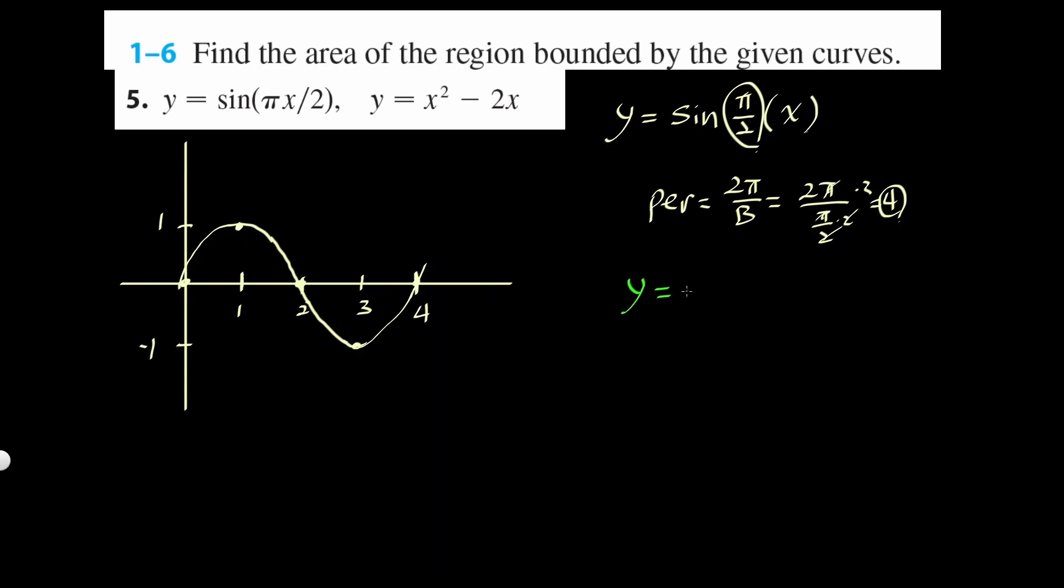Let's graph y equals the second one. I'm going to factor x out, so I have x times x minus 2. So my x intercepts will be 0, and then 2. And this is going to be a parabola. So it's going to go up like that, something like that.